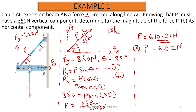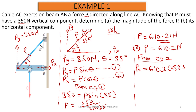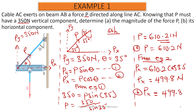Now let's consider part B — the horizontal component. From equation 2, the horizontal component PX is equal to P cos theta. Now we know the value for P is 610.2, so PX equals 610.2 times cos 35 degrees. When you calculate this, PX is going to be 499.8 Newton, approximately 500 Newton. So the horizontal component PX is 499.8 Newton.